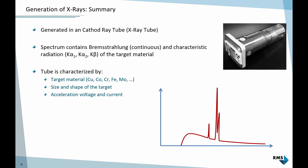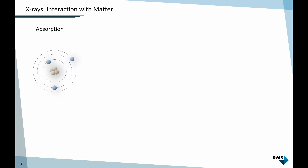Now that we can generate X-rays, we want to shoot a beam at our sample. The question is, what happens when X-rays interact with solid matter? One phenomenon we observe is absorption: the X-ray beam arrives at the sample, interacts with the electrons of the sample material, is absorbed, and there is an energy transfer that heats up the sample slightly. It's a complete energy transfer to the sample.